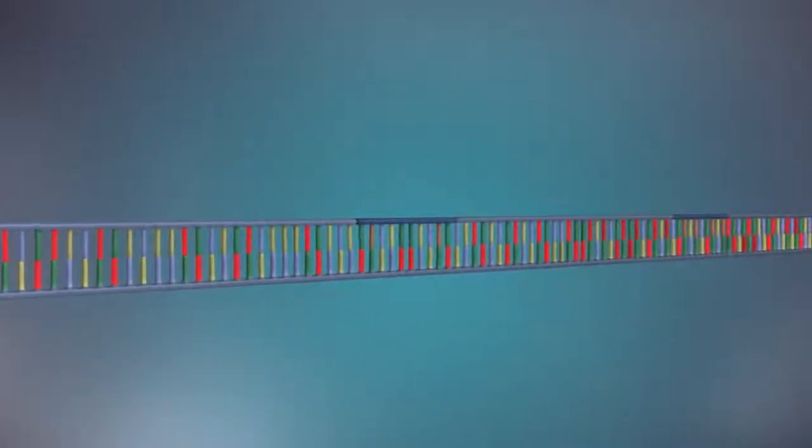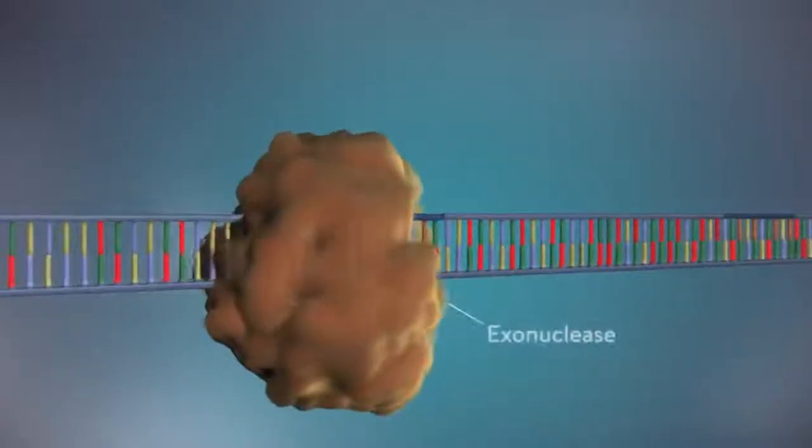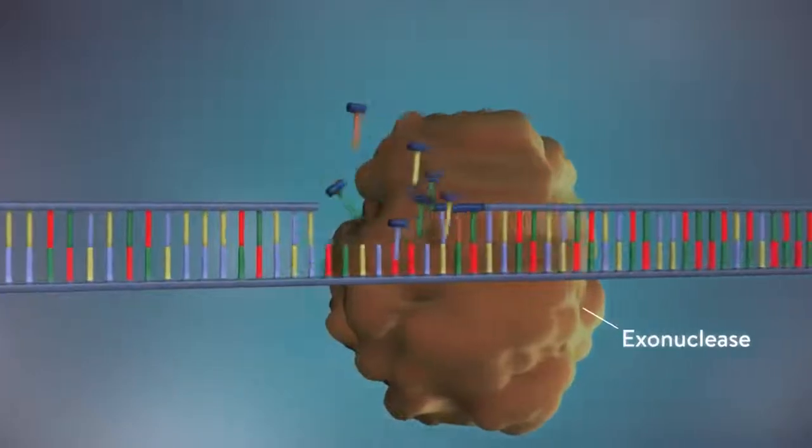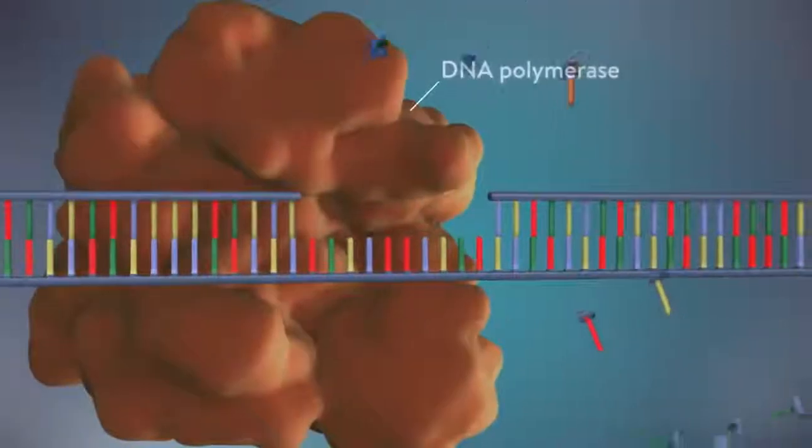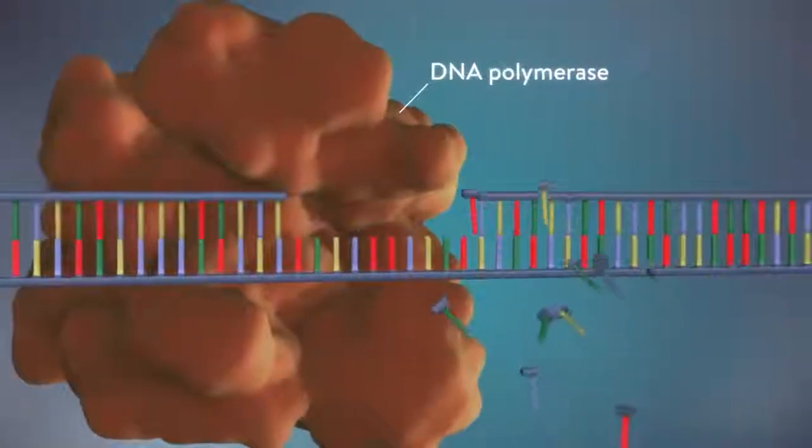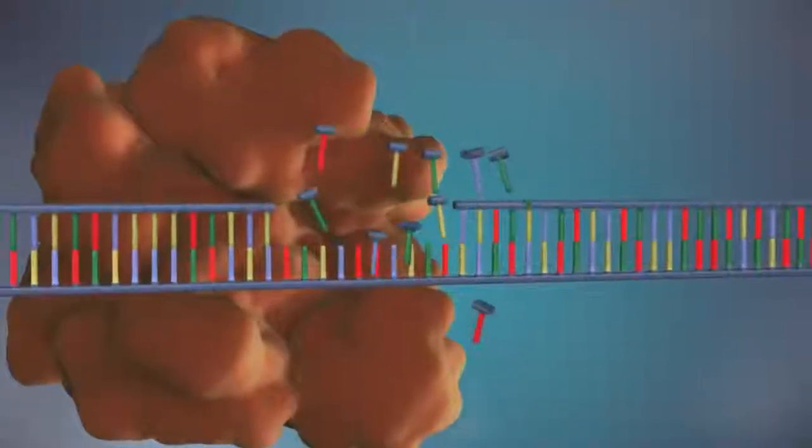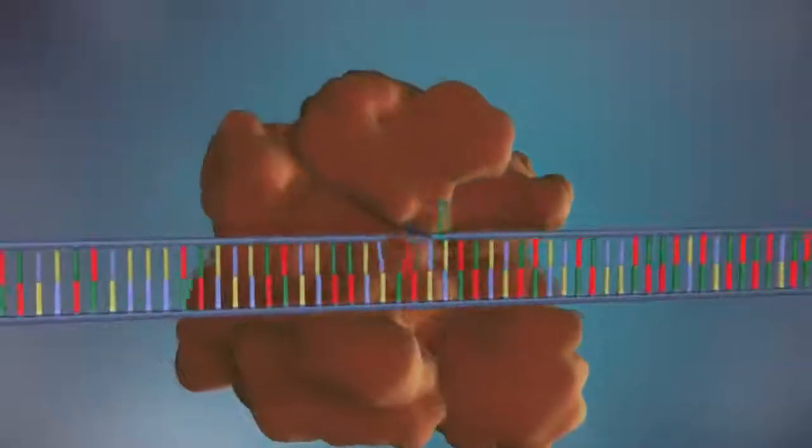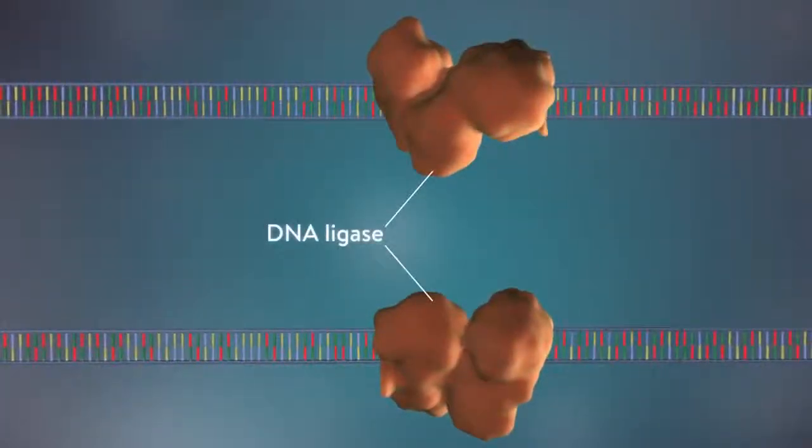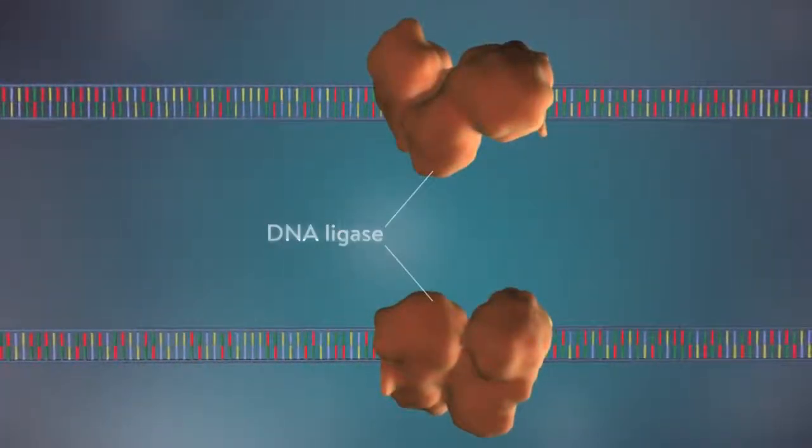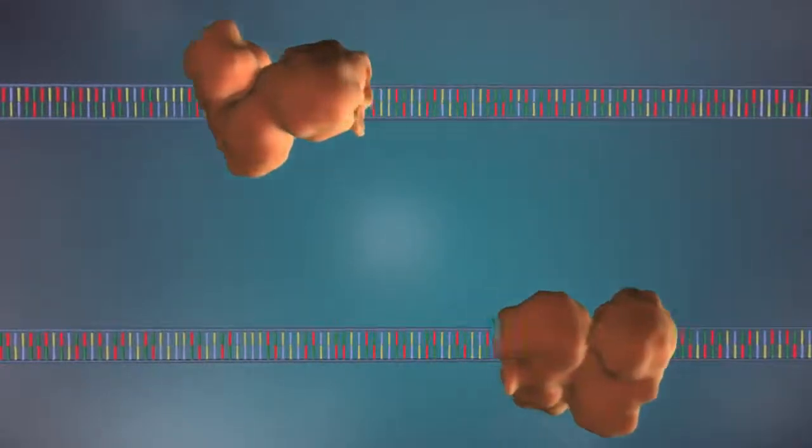Once the new DNA has been made, the enzyme exonuclease removes all the RNA primers from both strands of DNA. Another DNA polymerase enzyme then fills in the gaps that are left behind with DNA. Finally, the enzyme DNA ligase seals up the fragments of DNA in both strands to form a continuous double strand.